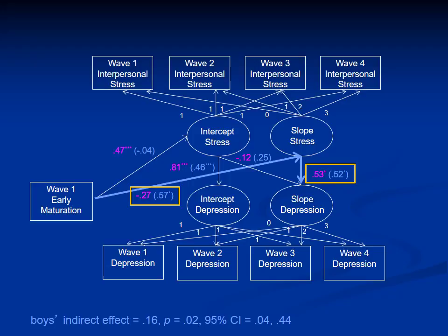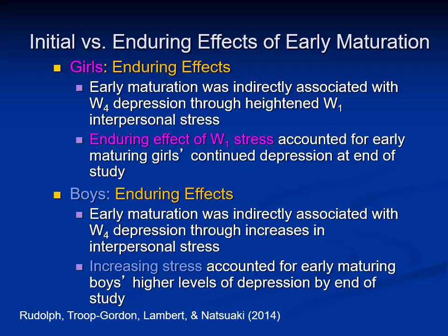Finally, we examined whether we could account for girls' and boys' levels of depression at the end of the study — the enduring effects of early maturation. In girls, early maturation was indirectly associated with wave 4 depression through heightened initial interpersonal stress, so the enduring effect of this initial stress accounted for early maturing girls' continued depression at the end of the study. In boys, early maturation was indirectly associated with depression at the end of the study through increases in interpersonal stress — so increasing stress accounted for early maturing boys' higher levels of depression by the end of the study.